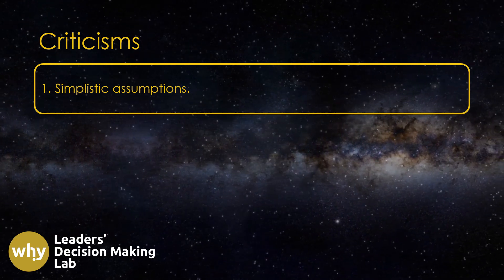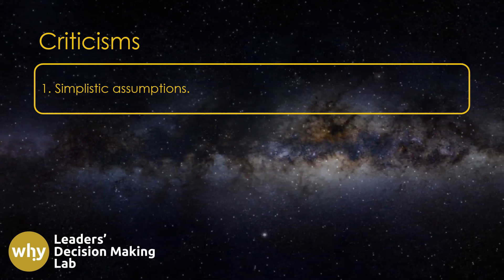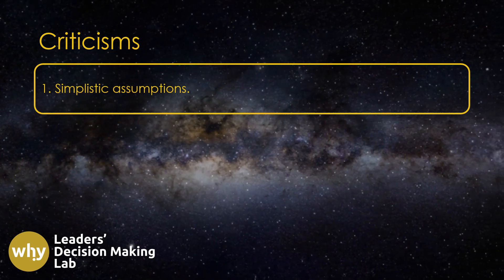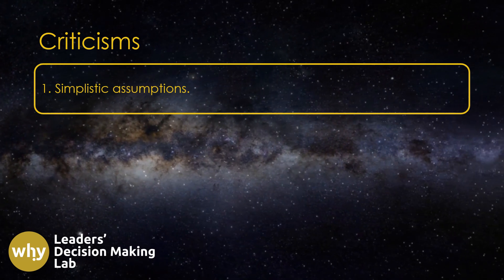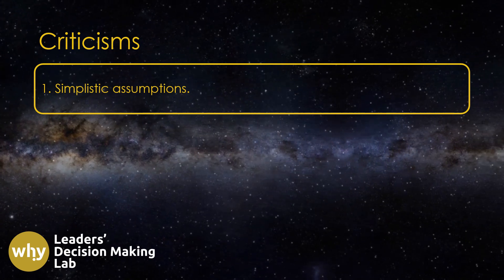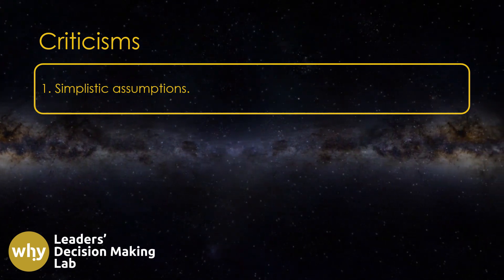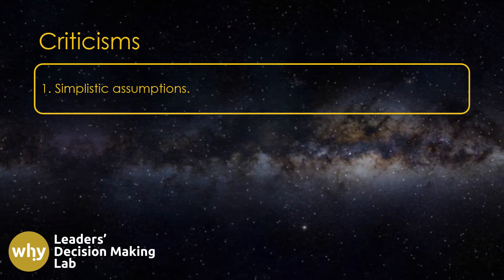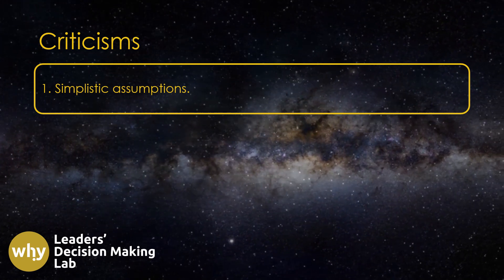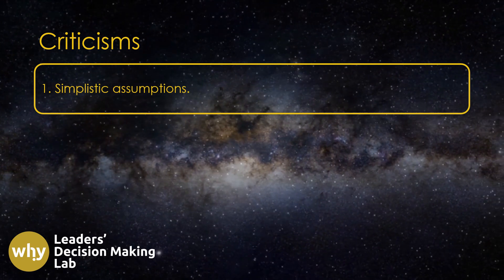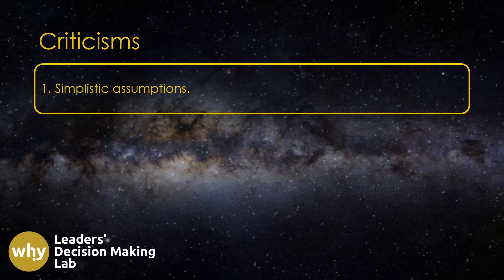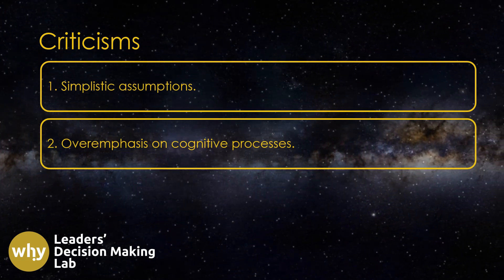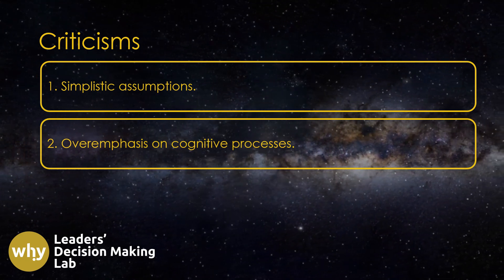No theory is perfect. What are the criticisms of expectancy theory? First, expectancy theory assumes that people make rational decisions based on calculated outcomes. However, you may encounter team members who are influenced by emotions, stress, or group dynamics, which can lead to irrational decision-making—choices that are not logically consistent or do not maximize a person's self-interest. For example, a team member may prioritize helping a struggling colleague over completing his own task, even if it doesn't maximize his personal rewards.